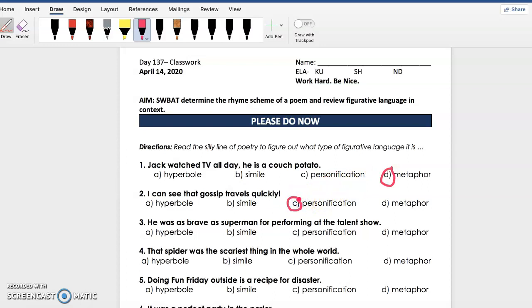Three: He was as brave as Superman for performing at the talent show. I see that they're comparing the guy to Superman while using the word as, so this is a simile.